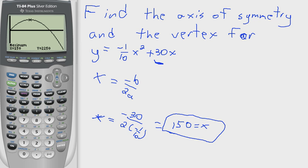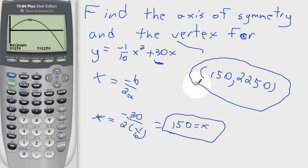So then your vertex is 150, and these numbers should match up, the vertex and the axis of symmetry, and then you have 2,250. So this is the vertex, and this is the axis of symmetry.